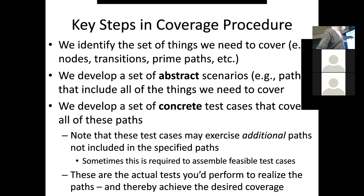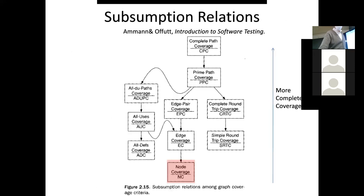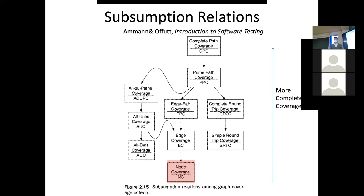Now, it turns out there's what's known as a subsumption hierarchy. What I mean by this is there are different levels — at an intuitive level, different levels of strength by which you can cover your system. By strength I mean you can cover it more completely or less completely. More complete coverage involves often more work on your part, but it would be more thorough. Lower levels would be less thorough.